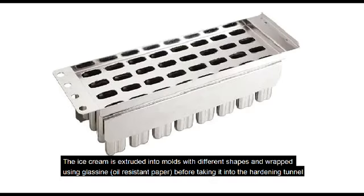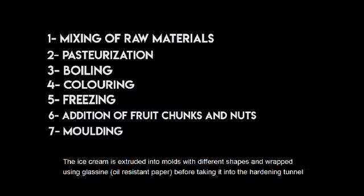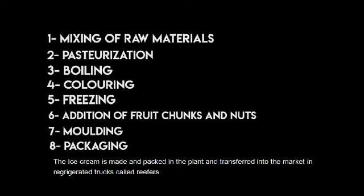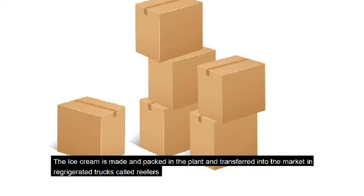The ice cream is extruded into molds with different shapes and wrapped using oil-resistant paper like glassine before being taken into the hardening tunnel. The ice cream is cooled as quickly as possible down to a holding temperature of less than -13°F or -25°C. It is then packed in the plants and transferred to the market in refrigerated trucks.